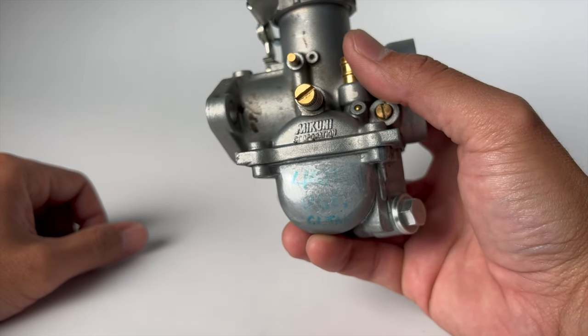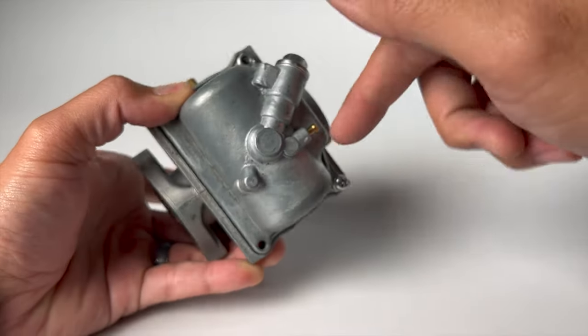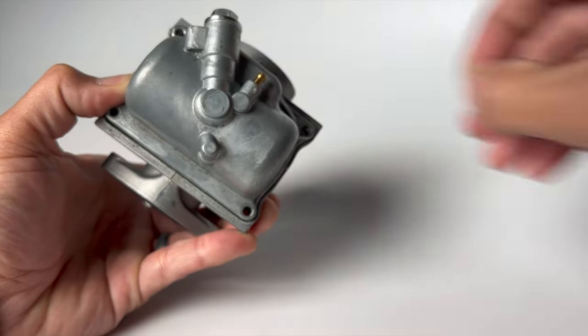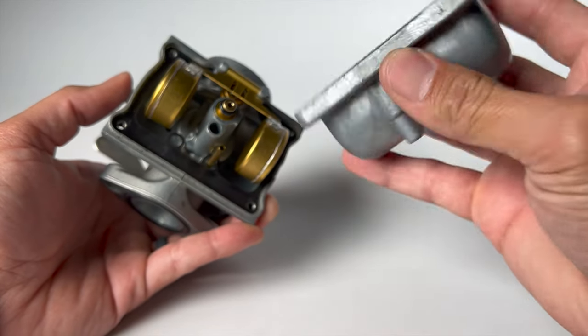Now we need to swap out our pilot jet. You're going to undo the bottom of the bolt. Detach the bolt from the rest of the carburetor.